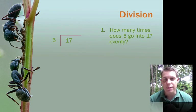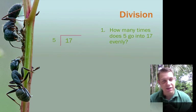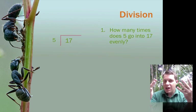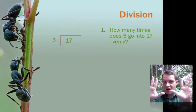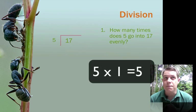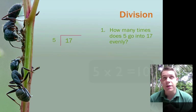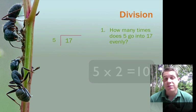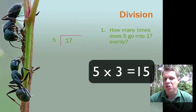Then we have to think, how many times does 5 go into 17 evenly? If you're not exactly sure, we can't use our fingers anymore because there's not enough of them. We don't have 17 fingers. We can use our multiplication tables. If we think 5 times 1 is 5. I could probably get closer to 17. 5 times 2 is 10. Let's see if we can get a little closer. 5 times 3 is 15. That's very close to 17. Let's see if we keep going.